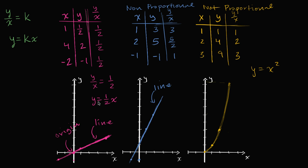So to summarize: the first set of points could be sampled from y equals 1/2 x — proportional. The second looks like y equals 2x plus one — a linear relationship, but it does not go through the origin, so not proportional. The third looks like y equals x squared — goes through the origin when x is zero, but it's not a linear relationship. Any way you look at it, visually a proportional relationship must be a line that goes through the origin, or in a table the ratios must always be the same value. That was only the case with the first (magenta) relationship.